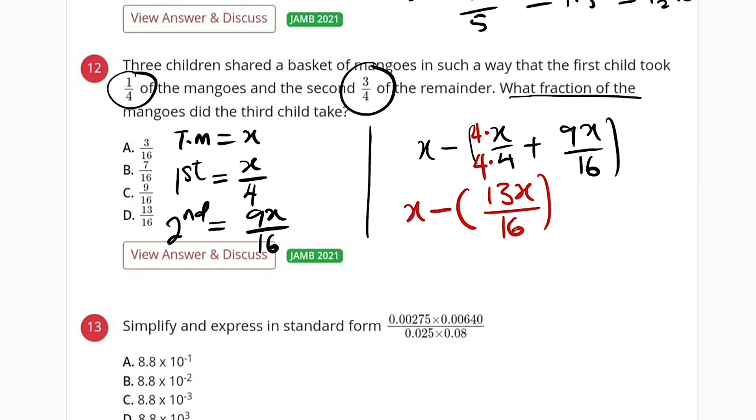So now we have 16 times x, which is 16x minus 13x, the whole of this divided by 16. This is equal to 16 minus 13 is 3x divided by 16. So this is the share of the third person.